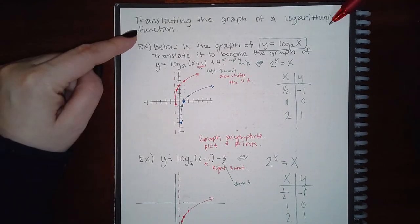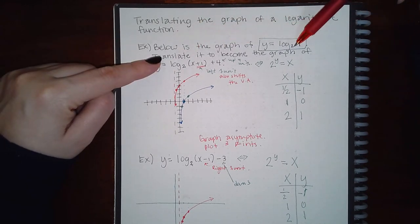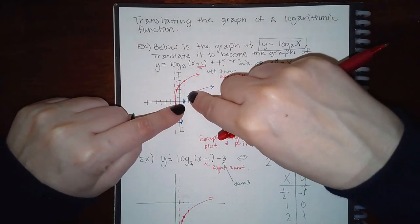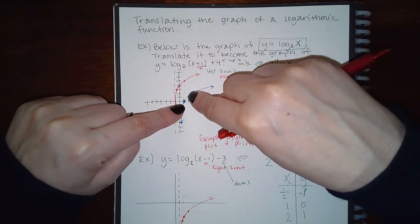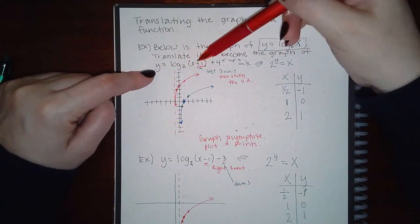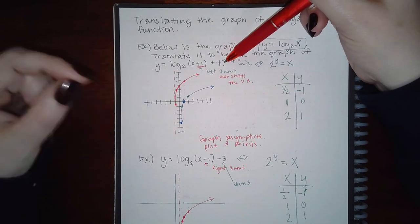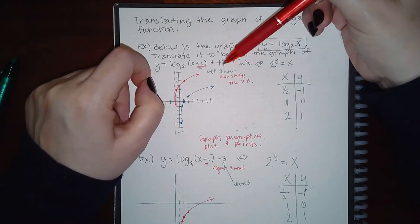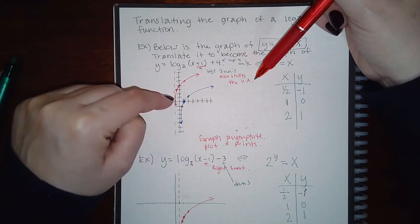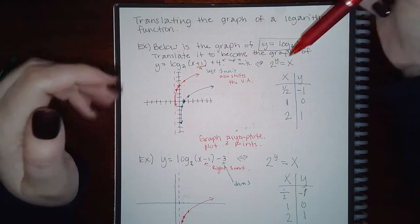This topic is translating the graph of a logarithmic function. Below is the graph of y equals log base 2 of x — that's the graph here in blue. Originally they only give you that one point and the curve. It says translate it to become the graph of log base 2 of (x+1) plus 4. If this is a grab-and-slide problem in ALEX, all you need to do is grab that one point and move it whichever way you need to, and move your asymptote around.